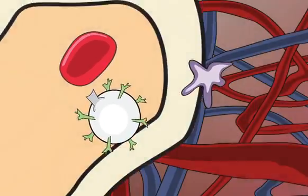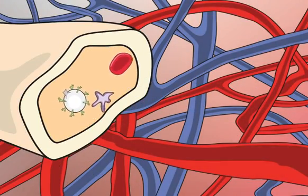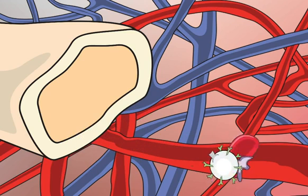Our blood cells reach full maturity in the bone marrow before they migrate to the blood vessels and enter the bloodstream.